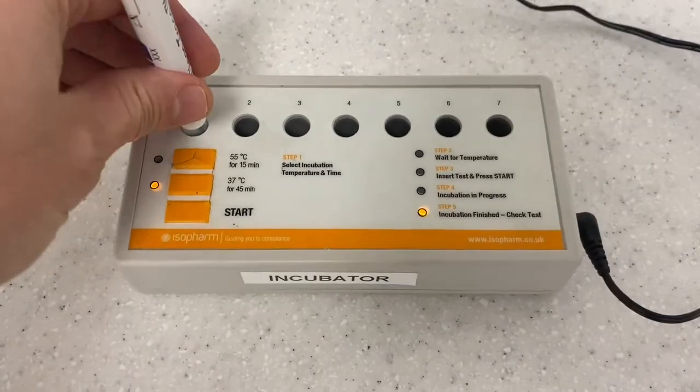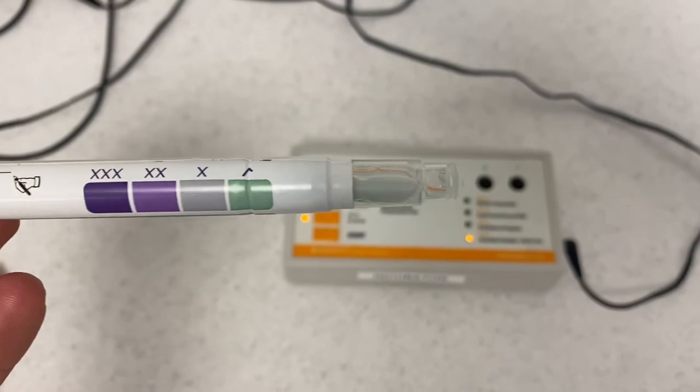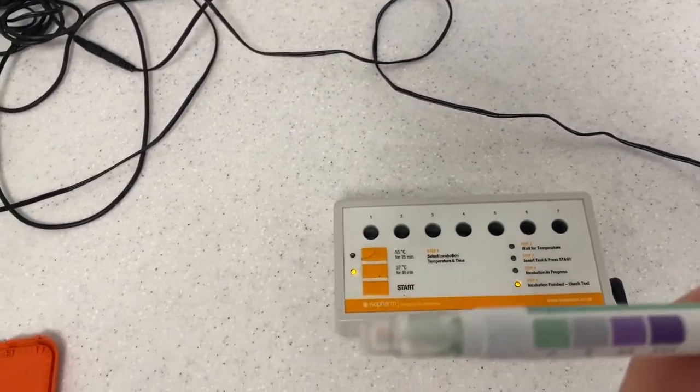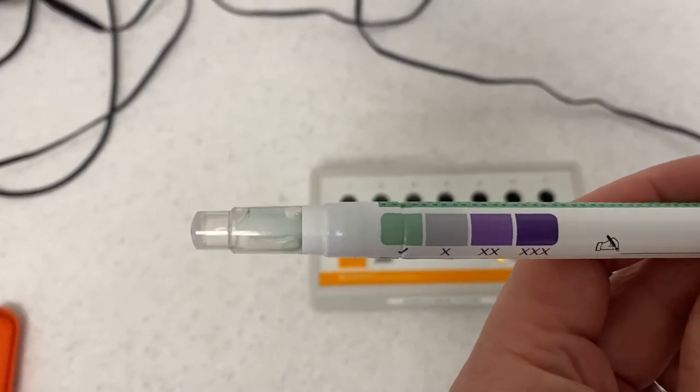Remove the Clean-Trace pen and check the color of the solution against the indicators. A green result is a pass, and any shade of purple is a fail.